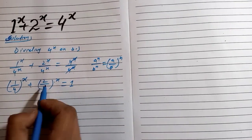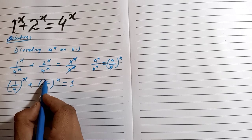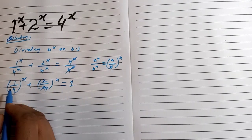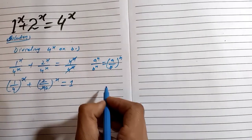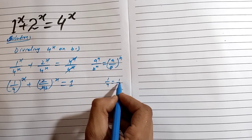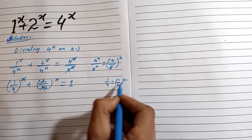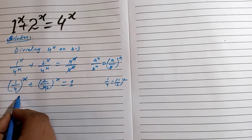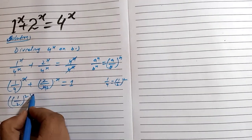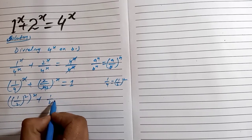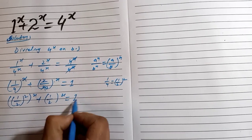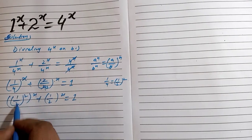The 2 and 4 simplify, so 2/4 becomes 1/2. Also, 1/4 can be written as (1/2)^2. So we have (1/2)^(2x) plus (1/2)^x, which is equal to 1.